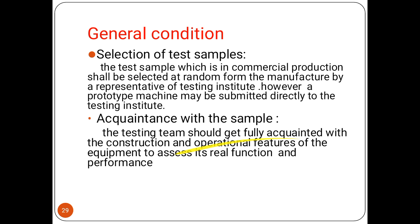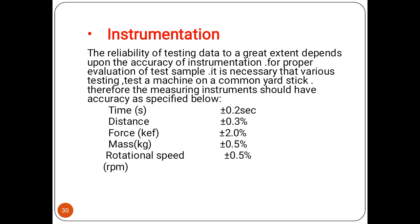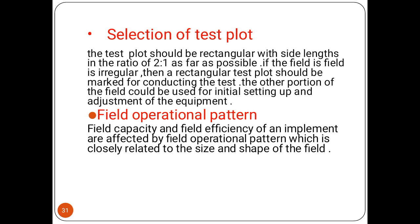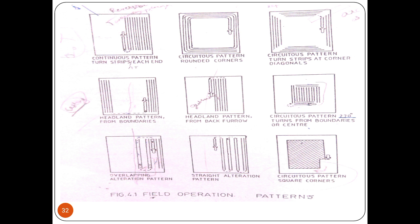Regarding general conditions: selection of the test sample is a very important process — it is generally selected at random from the manufacturer by representatives of the testing institute. Acquaintance with the sample is important to access its real functions and performance. Accuracy of instrumentation is very important to get proper data. For selection of the power plot, the plot should be rectangular with a side ratio of 2 to 1, and the operational pattern may be selected as a continuous or circuitous pattern.